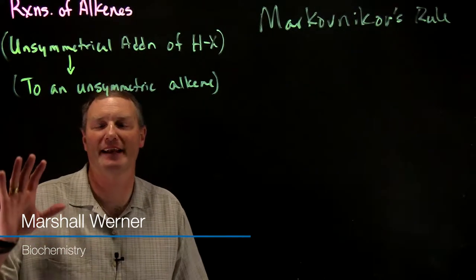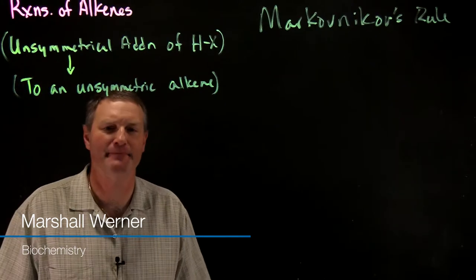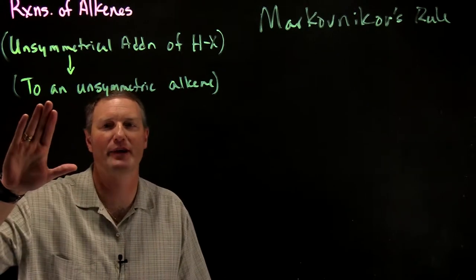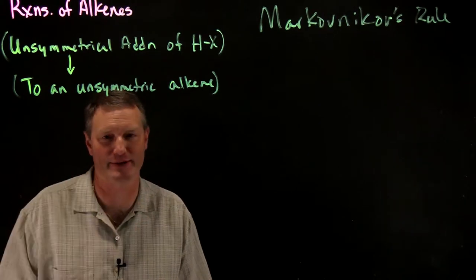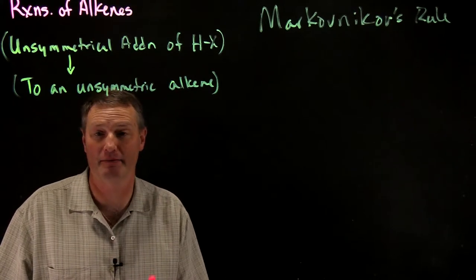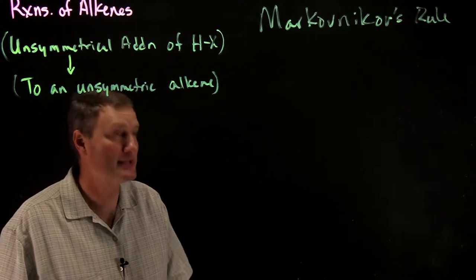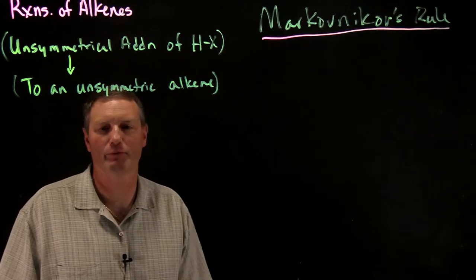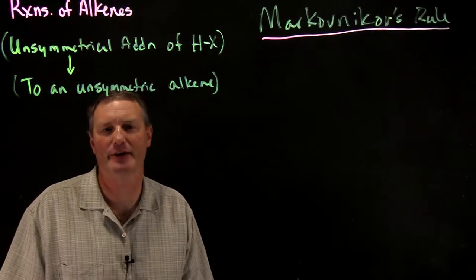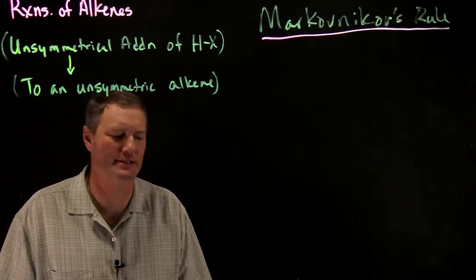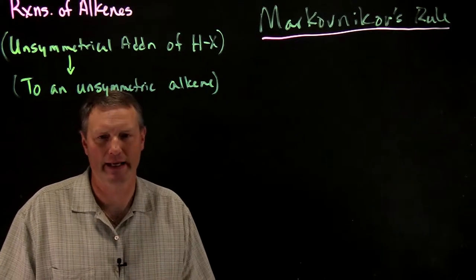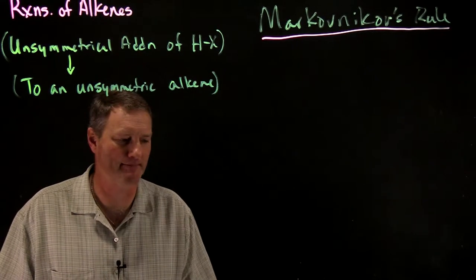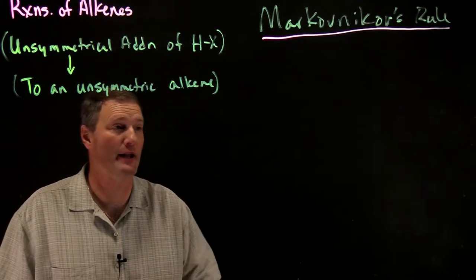In this video we're going to look at reactions of alkenes, specifically adding HX — an unsymmetrical addition of HX to an unsymmetric alkene. To do this we're going to be discussing Markovnikov's rule. Markovnikov was a Russian chemist in the late 1800s who did a whole series of reactions and came up with a predictive tool to assess what happens when you add HX reagents to a carbon-carbon double bond.